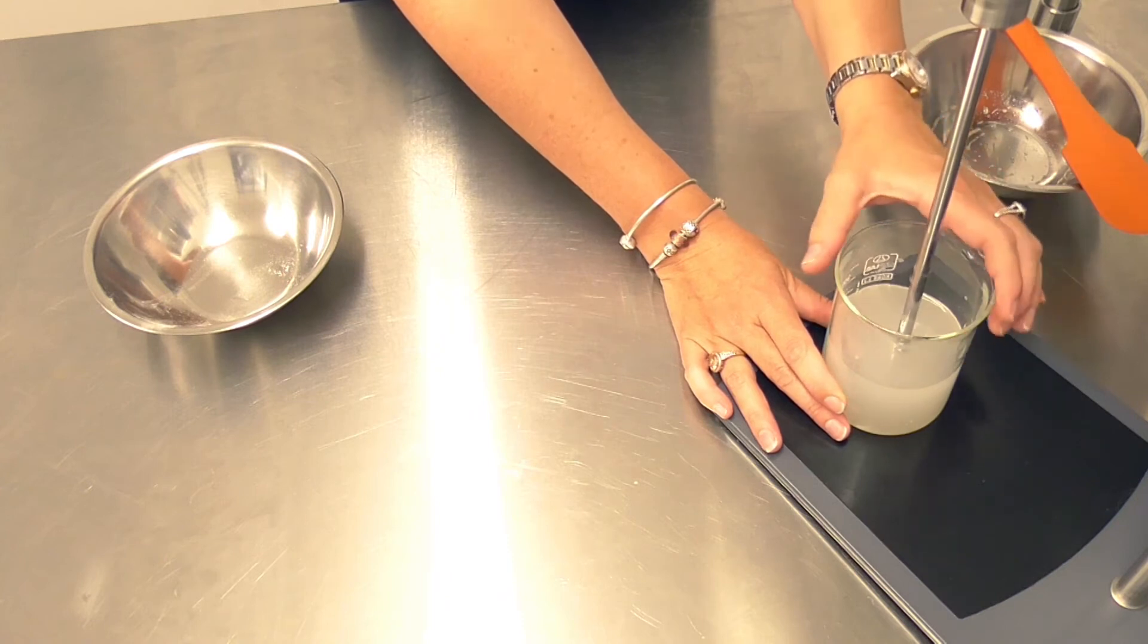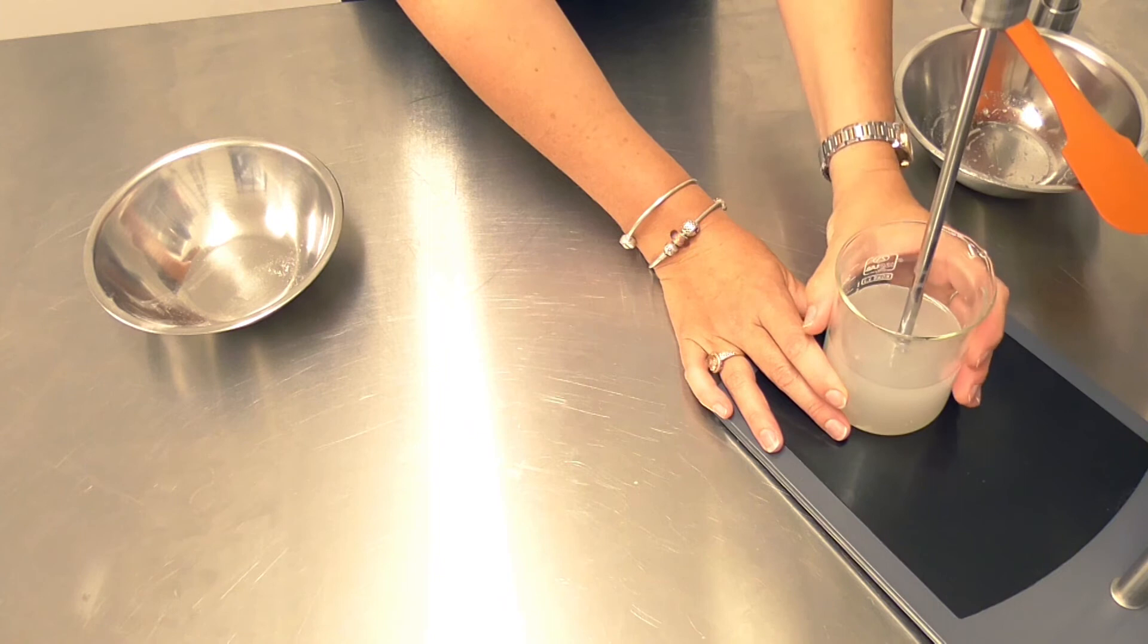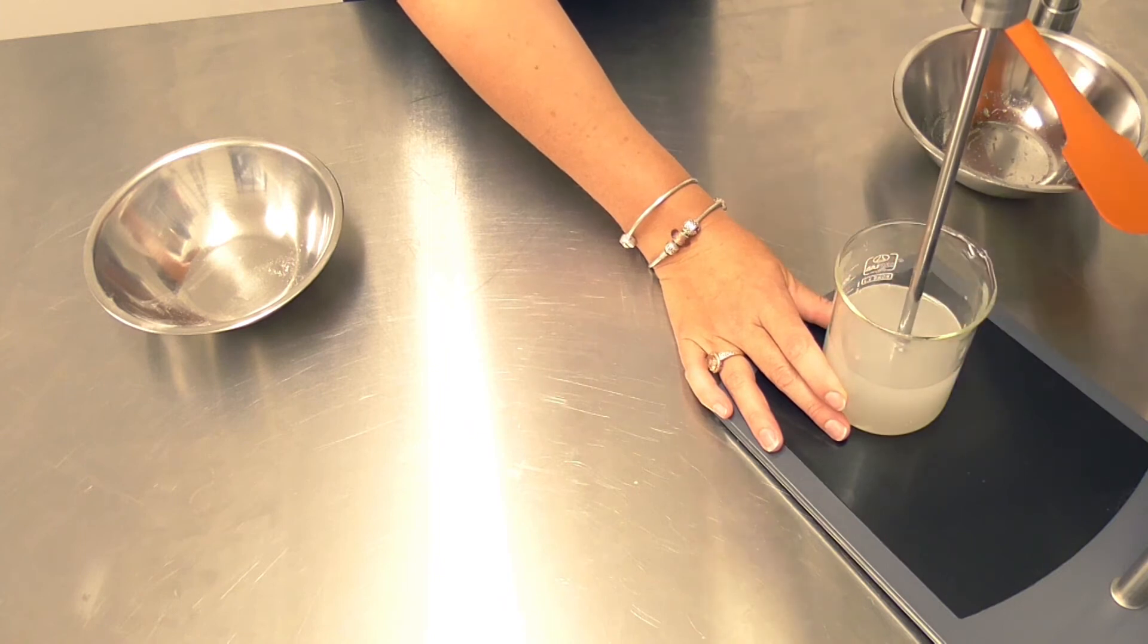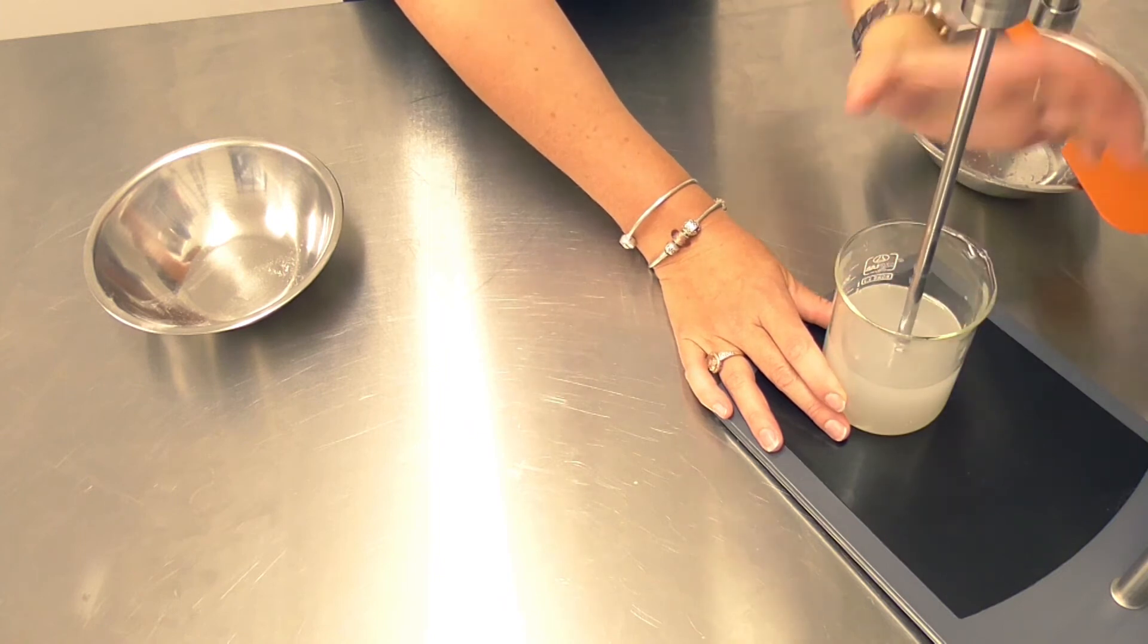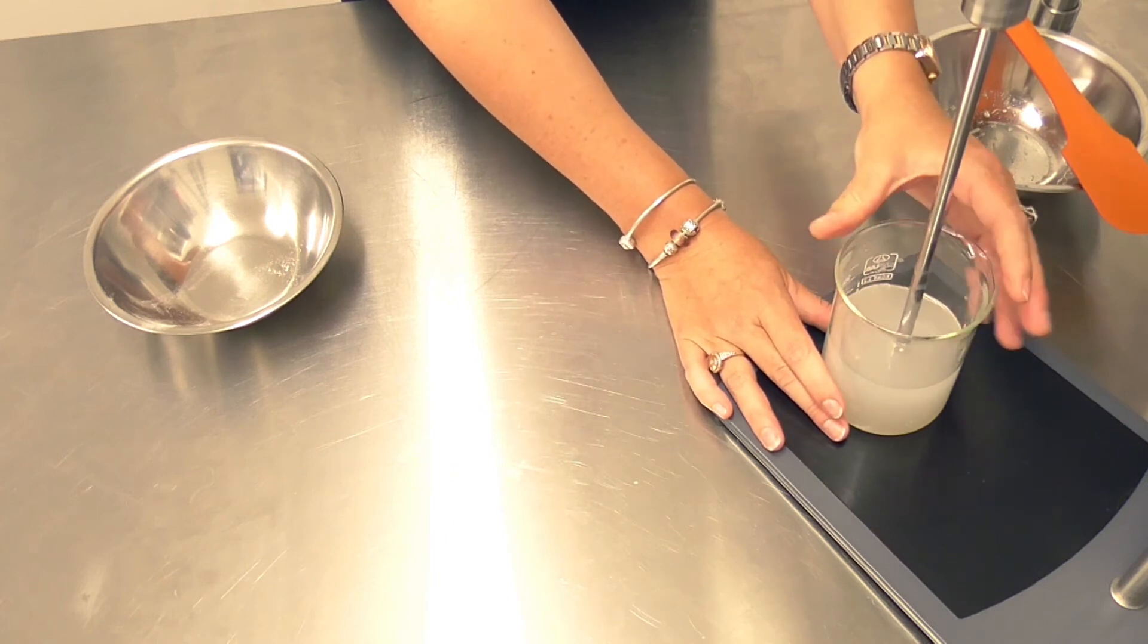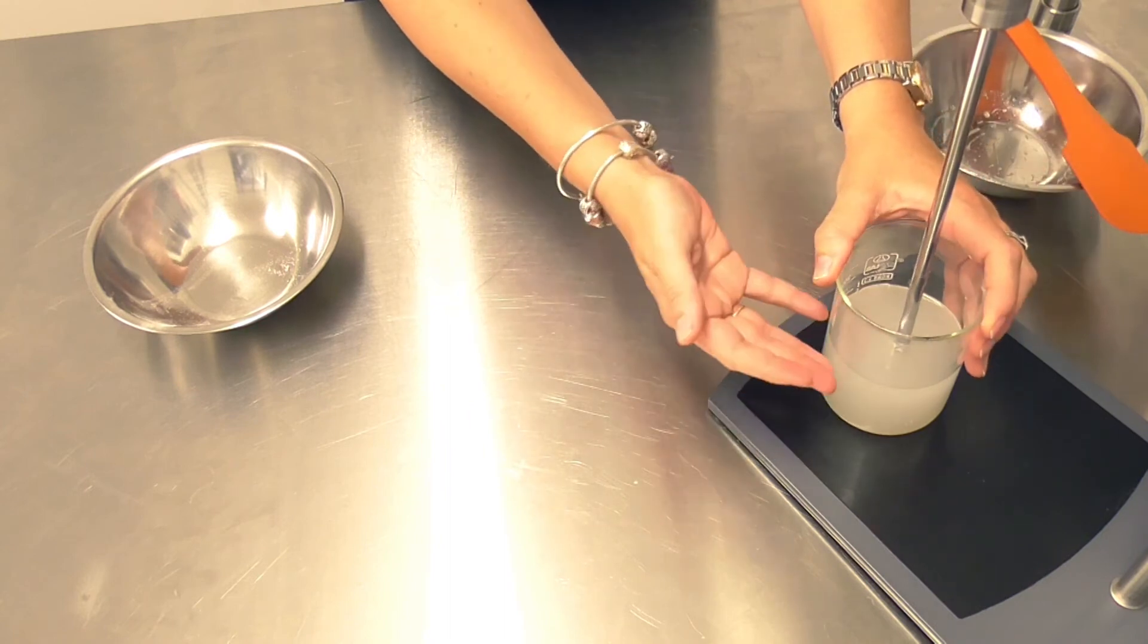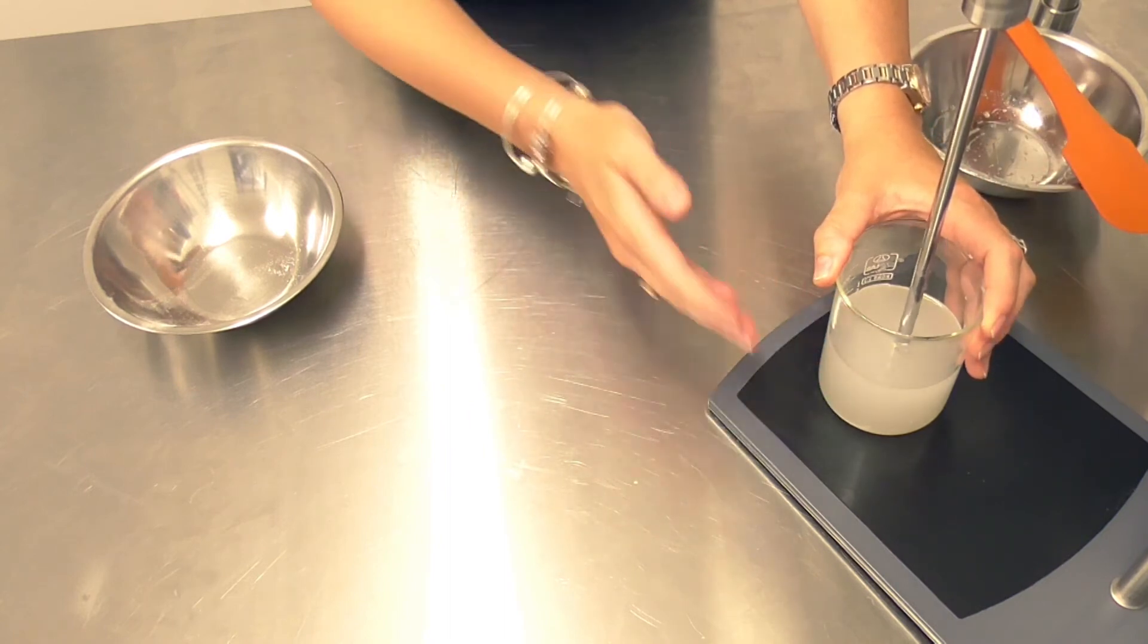I'm combining it with sclerotium gum because again, fantastic stability from that gum. It does take a little longer to hydrate than when using just xanthan gum, but there is very little tack, practically none at all when using sclerotium gum. So I'm using a combination of the two gums to build viscosity and stability to this product.